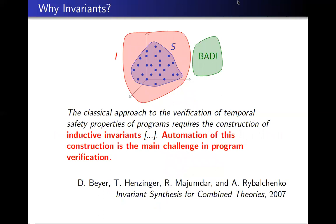One immediate use of invariants is to certify non-reachability. A paper on invariant synthesis states: "The classical approach to the verification of temporal safety properties of programmes requires the construction of inductive invariants. Automation of this construction is the main challenge in programme verification." The picture is: you've got the reachable states S and a set of error states BAD, and to prove safety you need to exhibit an invariant I that includes the reachable set and excludes BAD. Invariants can also support liveness proofs and other programme verification tasks.